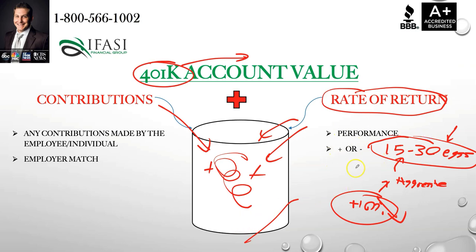With an IRA, you have more eggs in your basket to choose from and better customization options. Instead of the 15 to 30 different options you're handcuffed to in a 401k account, you could have over 5,000 different options to choose from. You can leverage an investment strategy, an income-related goal, an emergency goal, a safe accumulation goal, a legacy goal, or a tax goal.